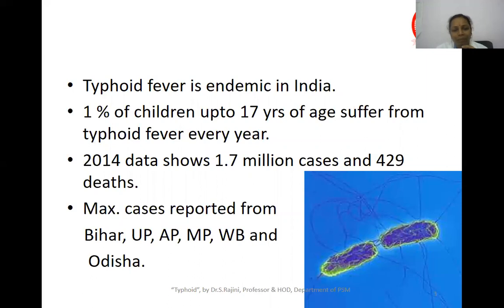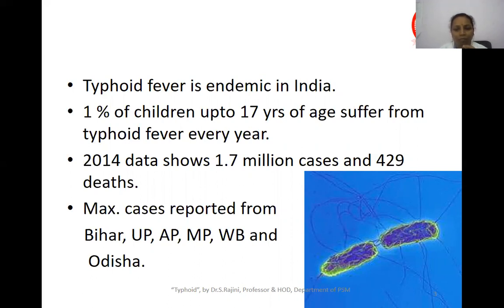Typhoid Fever is endemic in India, meaning you can see one or two patients having Typhoid Fever throughout the year in all areas. 1% of children up to 17 years of age suffer from Typhoid Fever every year, resulting in more than 1.7 million cases and 429 deaths. Maximum cases are reported in Bihar, Uttar Pradesh, Andhra Pradesh, West Bengal, and Odisha.